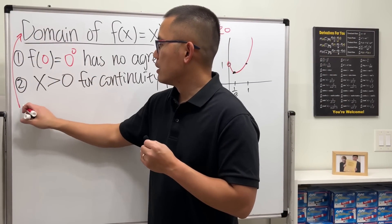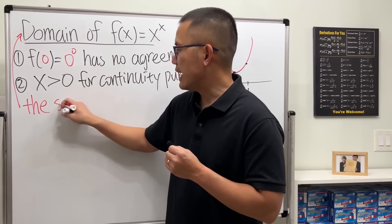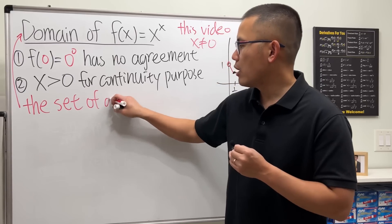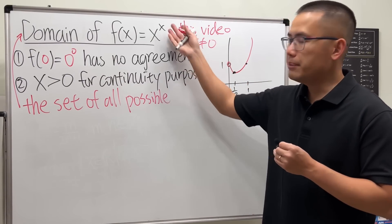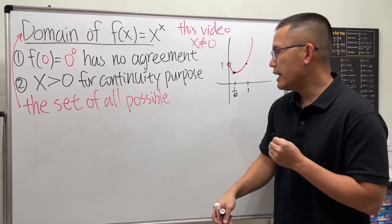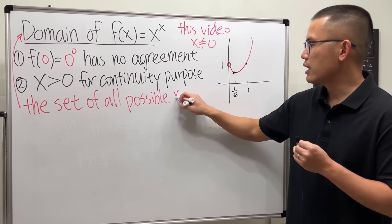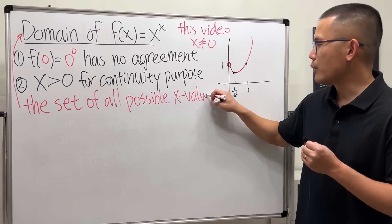Why don't we take a look at the negative numbers? Remember, for the domain, the definition is that it's the set of all possible inputs. Since I'm using x for the input here, I'll write down all possible x values.